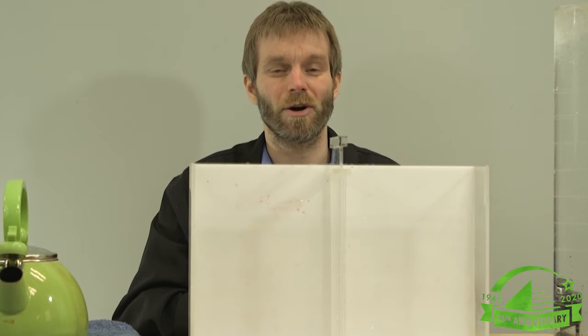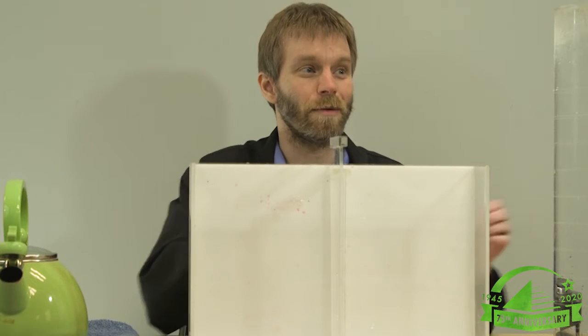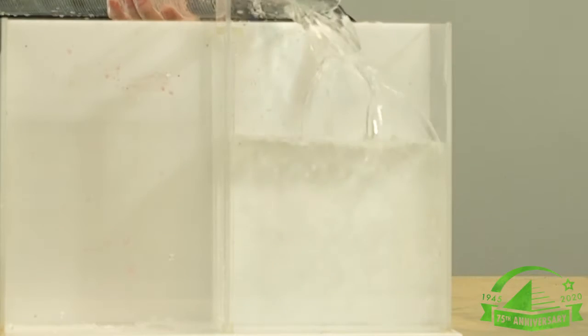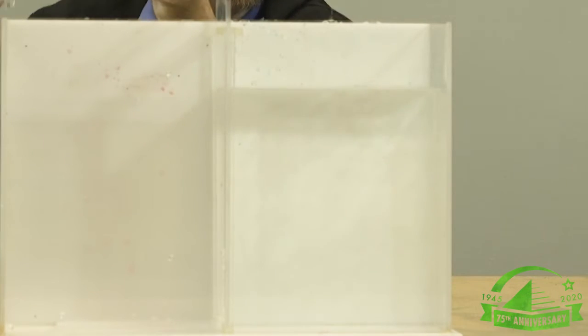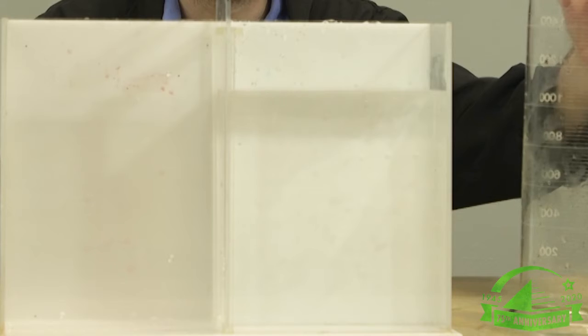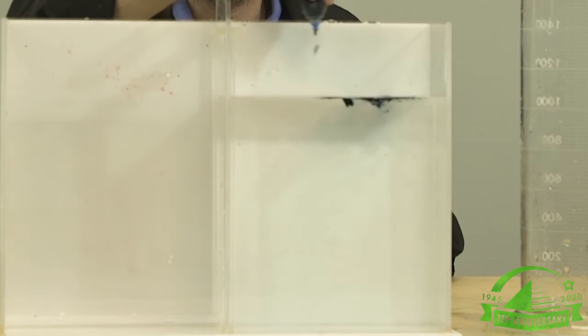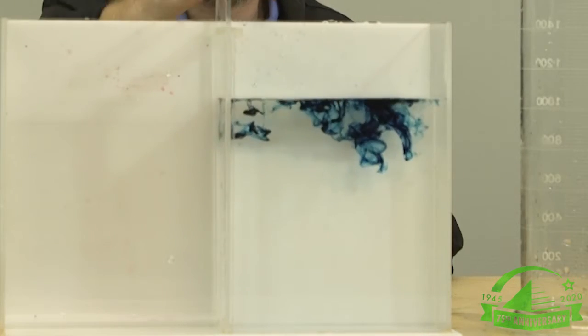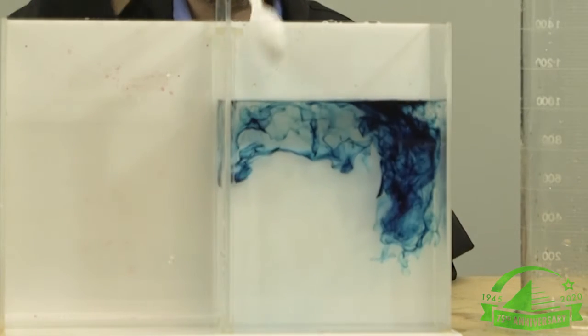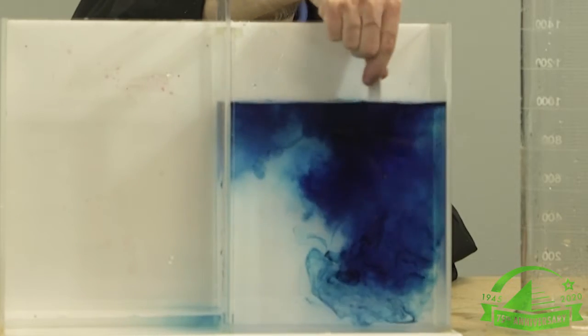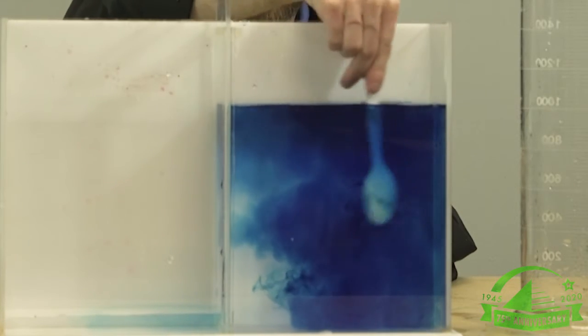On this side I'm going to place my cold water. Now it may be a little hard to see so we're going to make it very obvious that it's cold water with a little bit of blue food coloring. And let's stir that in so it's nice and clear and visible.